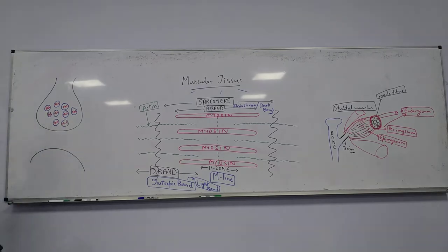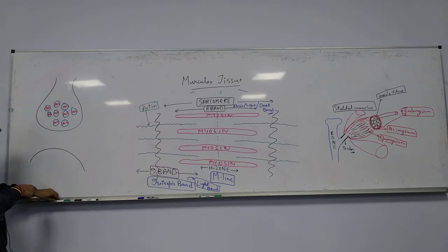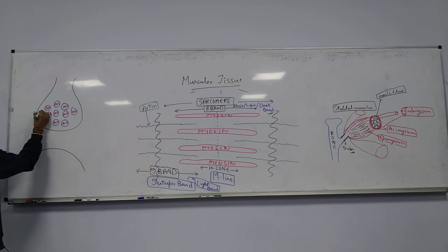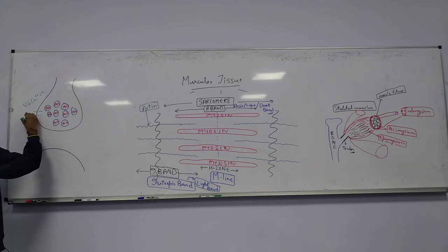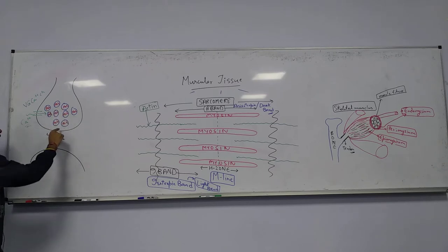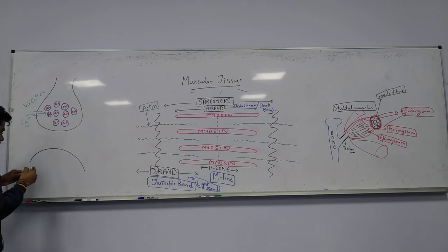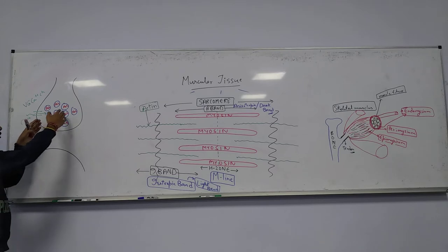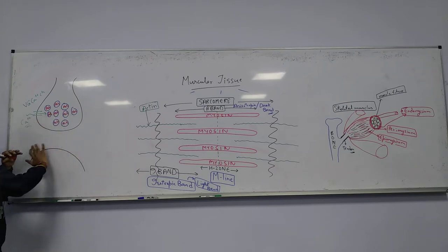These presynaptic vesicles contain acetylcholine. As the action potential arrives, voltage-gated calcium channels open and calcium ions come inside. These calcium ions cause fusion of the presynaptic vesicles with the membrane of the presynaptic cleft, and acetylcholine comes out by exocytosis into the synaptic gap.